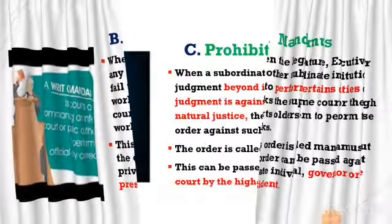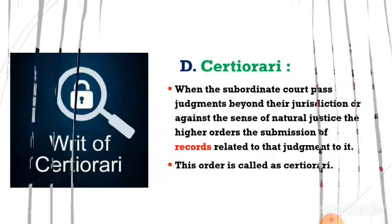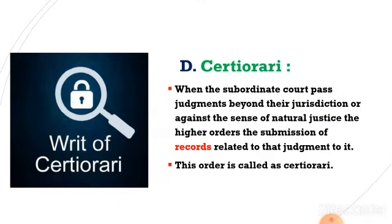The third remedy is prohibition. Prohibition and certiorari are similar with a small difference. In prohibition, when a subordinate court passes judgment by crossing its limitation of power or against the constitution, a higher court passes an order against the lower court — this is called prohibition. At that time, the lower court can answer the higher court orally without any documents. In certiorari, in the same situation, the lower court must answer the higher court with all documents related to their judgment. So the one simple difference between prohibition and certiorari is regarding answering — in prohibition, orally; in certiorari, with all documents.